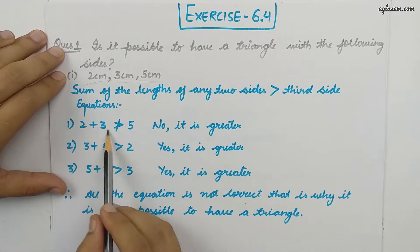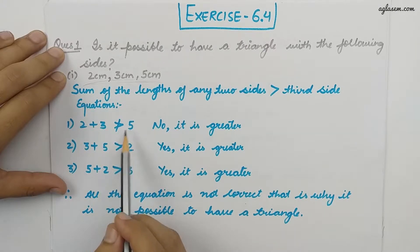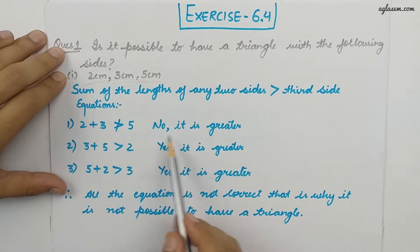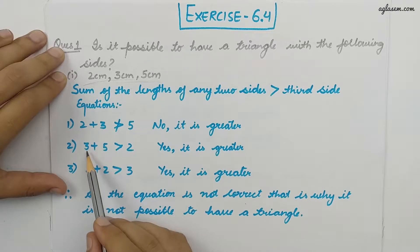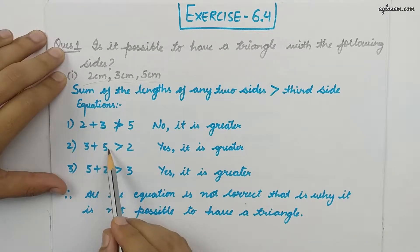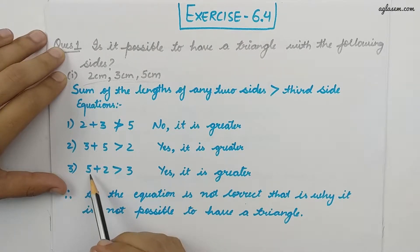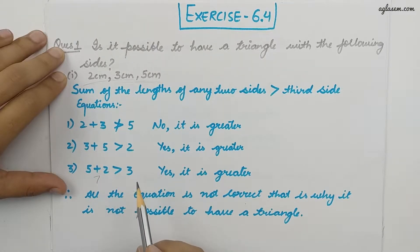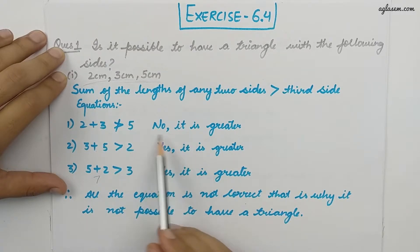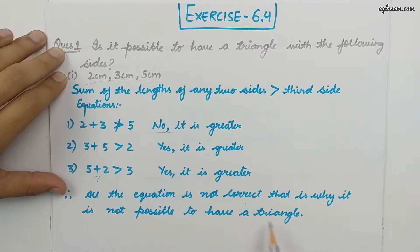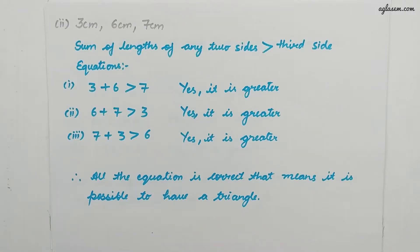For sides 2, 3, and 5: 2 plus 3 is not greater than 5 — it is equal to 5, so no. The other two sides: 3 plus 5 equals 8, which is greater than 2 — yes. And 5 plus 2 equals 7, which is greater than 3. Since one statement is not correct, it is not possible to have a triangle with these measurements.